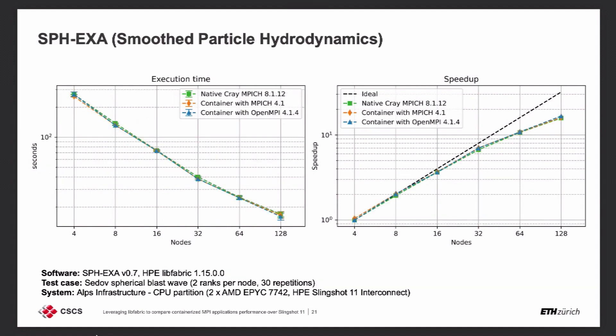Next, SPH-EXA — a highly performant and scalable smoothed particle hydrodynamics code developed in the context of the PASC project by partners including the University of Basel and CSCS. The test case is a spherical blast wave. Once again, very good overlap and basically almost identical performance at all node counts. The containers even edge out the native variant very slightly at 128 nodes.